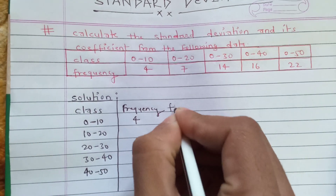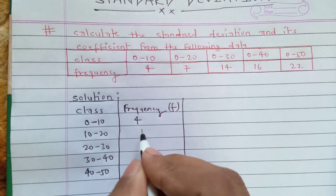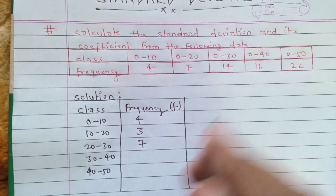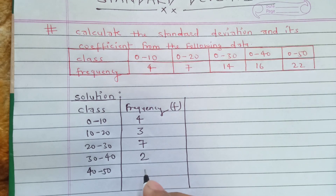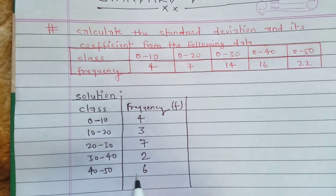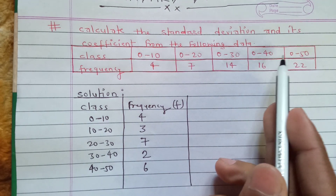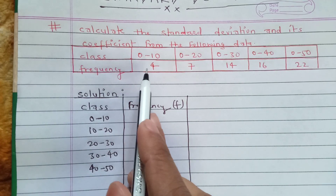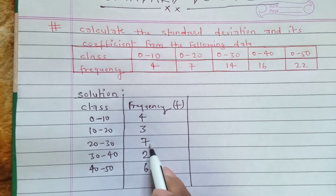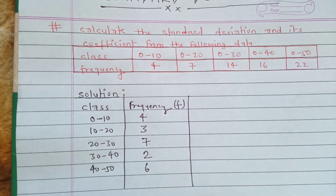We write F as 4. Then 7 minus 4 is 3, 14 minus 7 is 7, 16 minus 14 is 2, and 22 minus 16 is 6. So the frequencies are arranged as 4, 3, 7, 2, 6 by differencing consecutive cumulative frequency values.